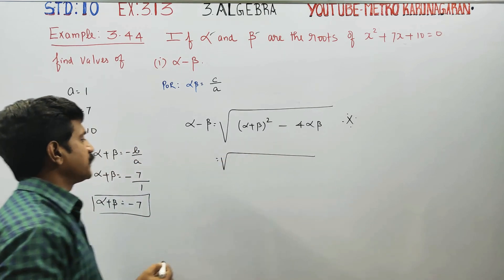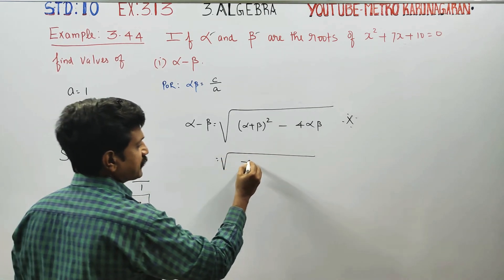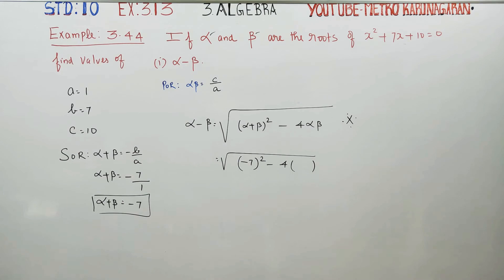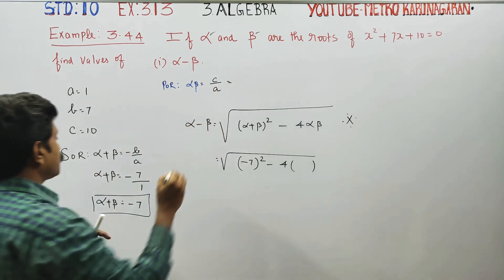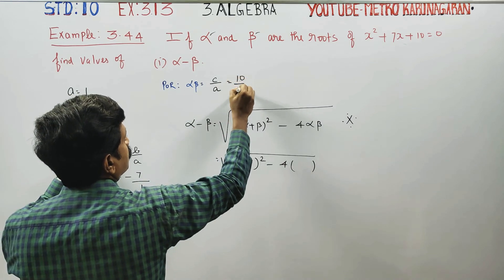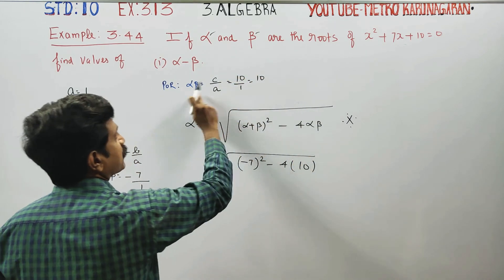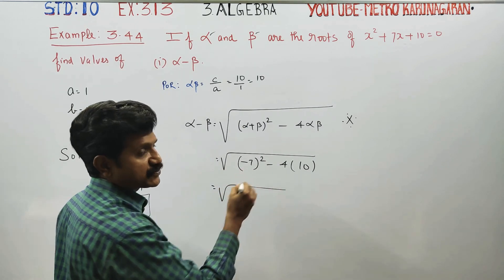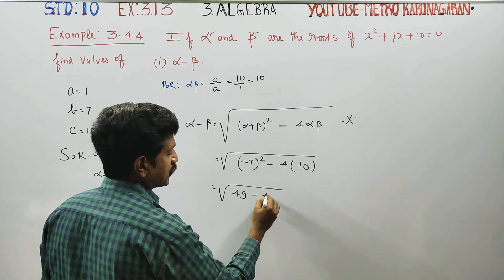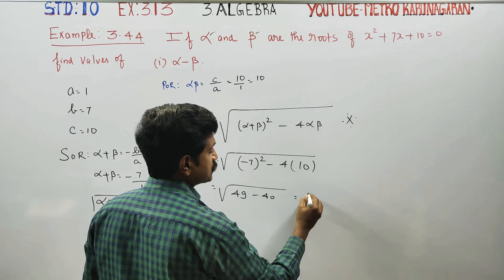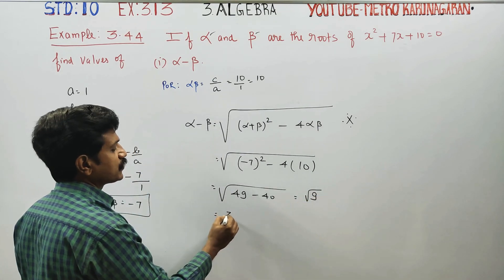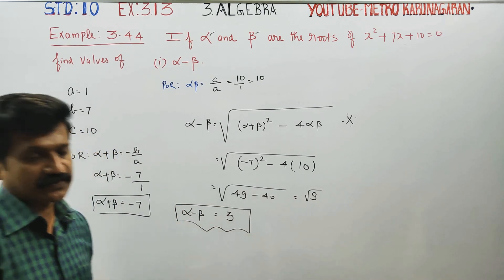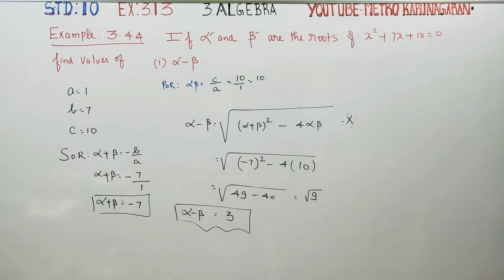Substituting: (minus 7) squared is 49, minus 4 times 10 gives 40. So 49 minus 40 equals 9. The square root of 9 is 3. Positive answer: alpha minus beta equals 3.